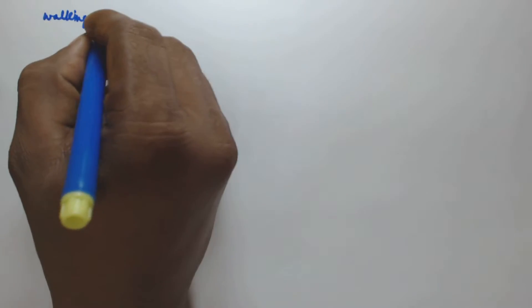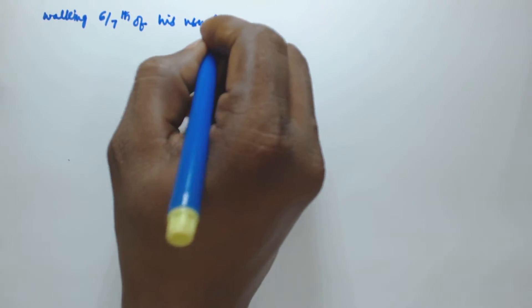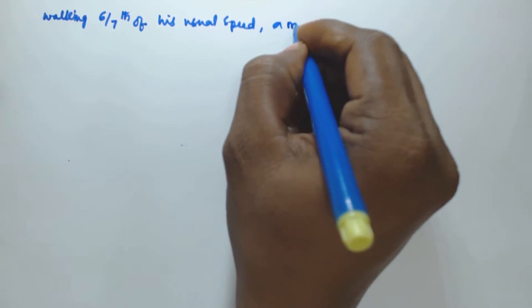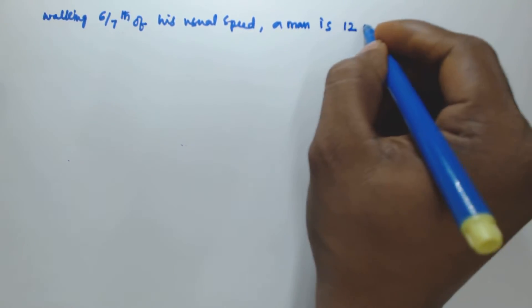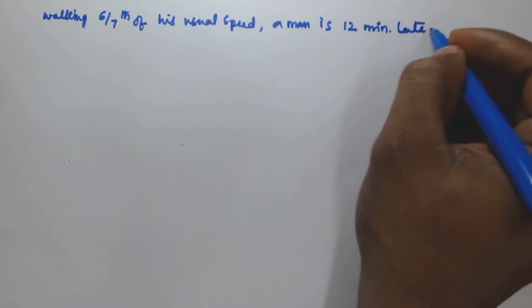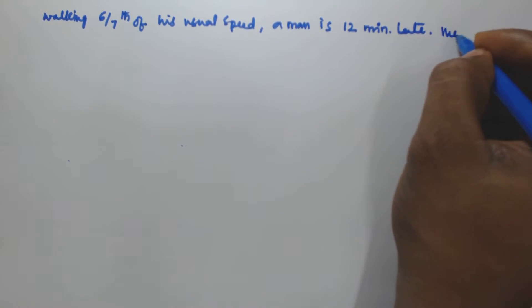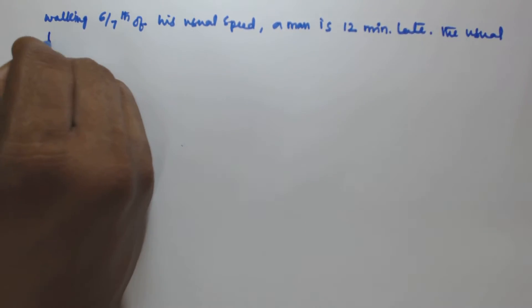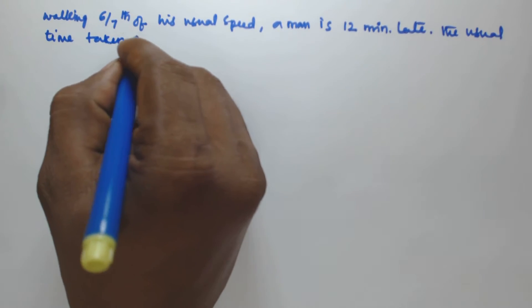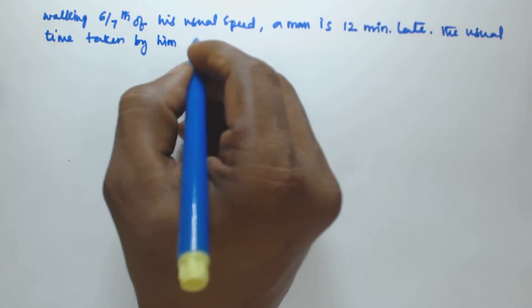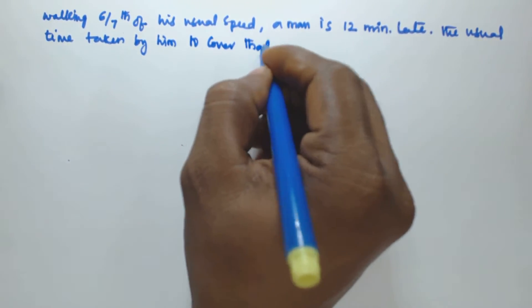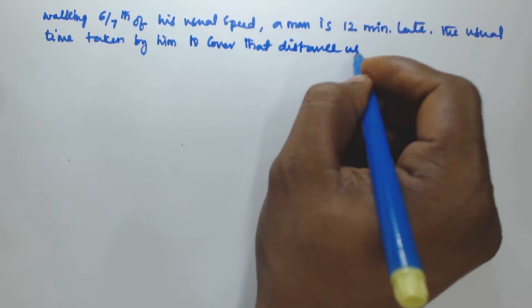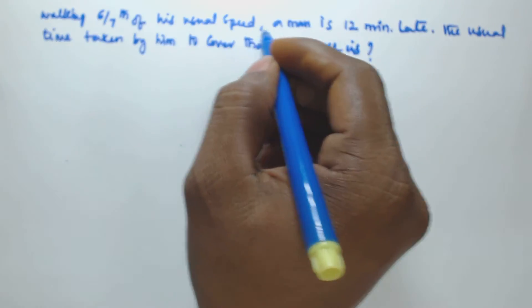Hello friends, in this video we will see a problem based on time, speed and distance. The problem is: walking at 6/7th of his usual speed, a man is 12 minutes late. So the usual time taken by him to cover that distance is what we need to find.